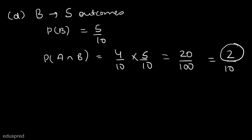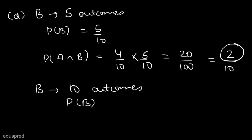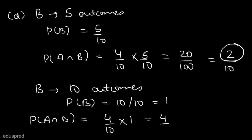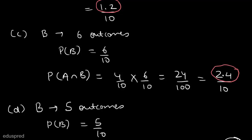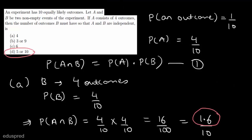Now let's check what happens if B has 10 outcomes. The probability of B is equal to 10 divided by 10, which is 1, and the probability of A intersection B is equal to 4/10 multiplied by 1, which equals 4 divided by 10. This is a natural number, so it works. We can interpret it as: A has 4 outcomes, B has 10 outcomes, and the number of common outcomes is 4. This is why options A, B, and C are wrong — they produce non-integer common outcome counts such as 2.4. The final answer is option D.